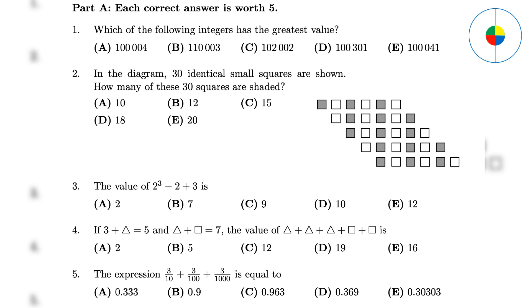Part A: Easy Questions. Question 1 - This is a simple comparison. The answer is B. Question 2 - This is a simple count. The answer is 15. Question 3 - This is a simple calculation. The answer is 9.